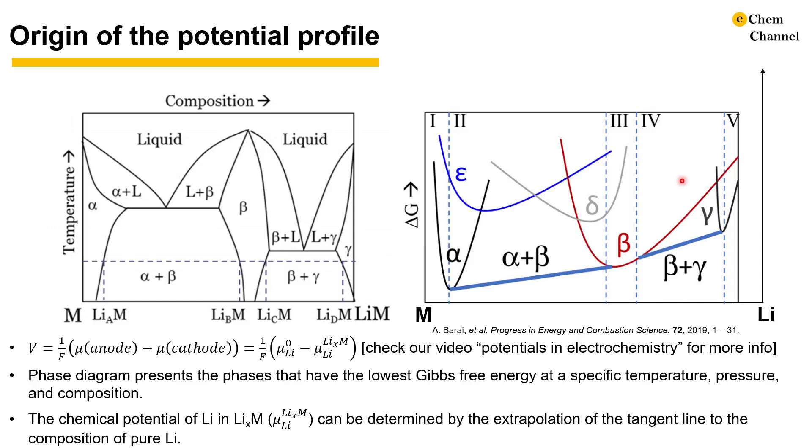For example, for the alpha plus beta region, we can obtain μ_Li, and for the beta plus gamma region, we can obtain μ_Li'. The chemical potential of lithium in lithium metal is the highest value the chemical potential can reach.